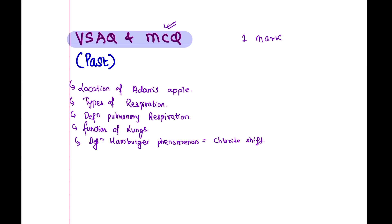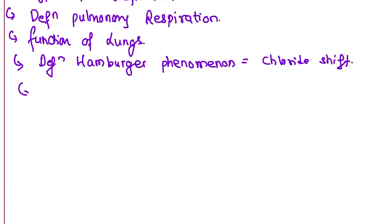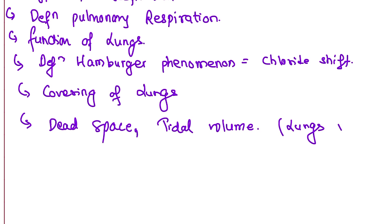Short answer question — diagram of chloride shift. You can refer to the chloride shift diagram. Covering of lungs — the lung cover is the pleura. Simple question. Dead space — dead space plus tidal volume, everything is important. Lung volume and capacity are important.